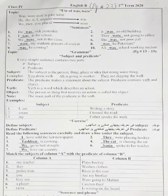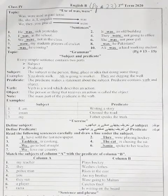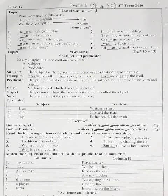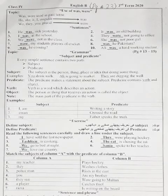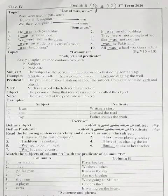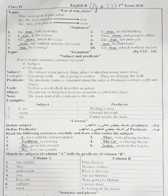بچوں، جو ہمارا 'was' اور 'were' ہے وہ ہمیشہ past tense میں استعمال ہوتا ہے۔ اور past tense میں 'was' اور 'were' singular اور plural کے according use ہوتے ہیں۔ He, she, it — singular کے ساتھ 'was' use ہوتا ہے۔ We, they, you اور plural کے ساتھ 'were' use کرتے ہیں۔